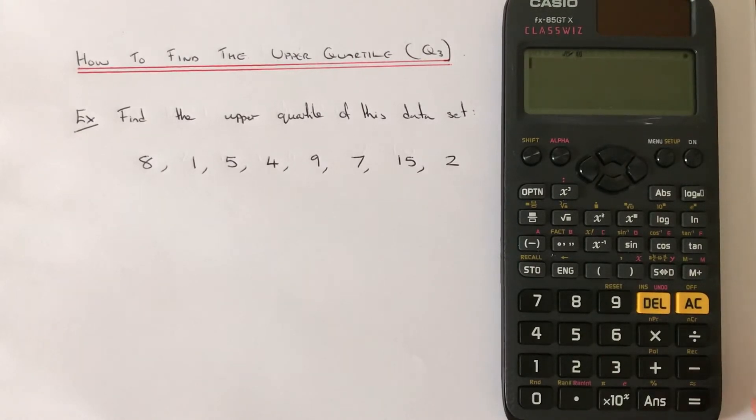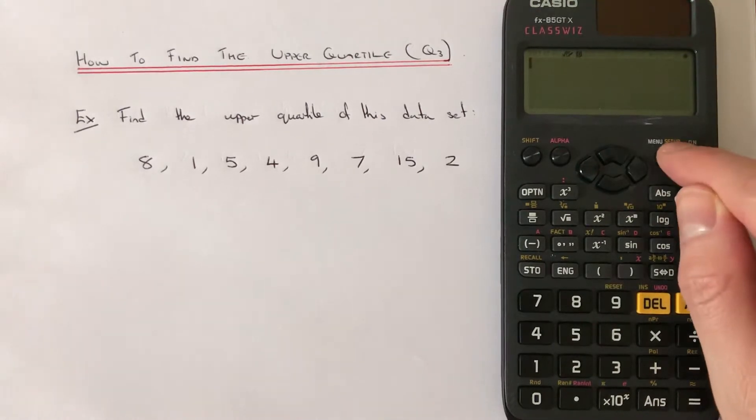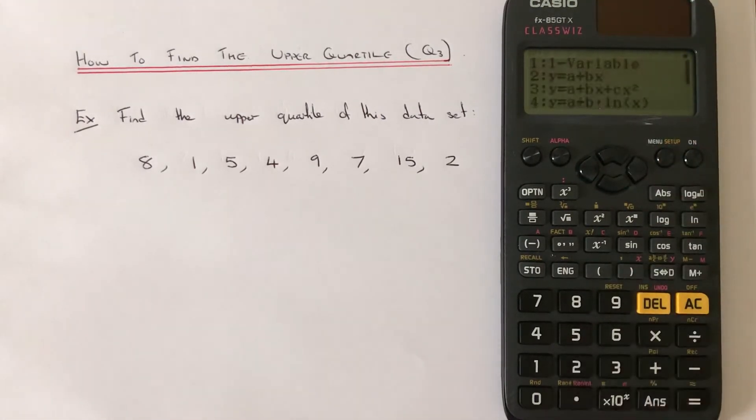So first of all, put your calculator in statistics mode. That is menu number 2, and select 1 for one variable data.